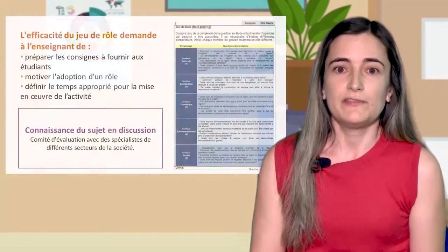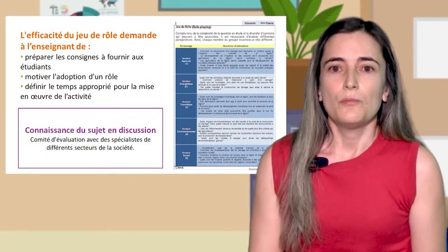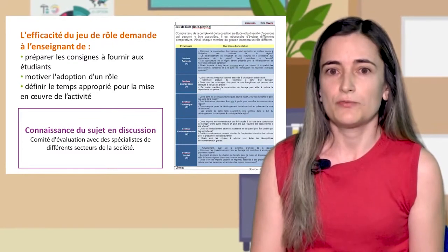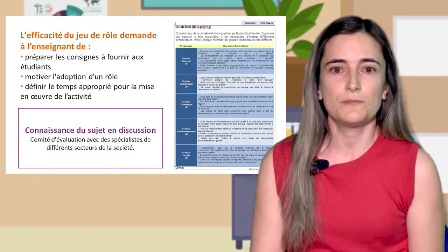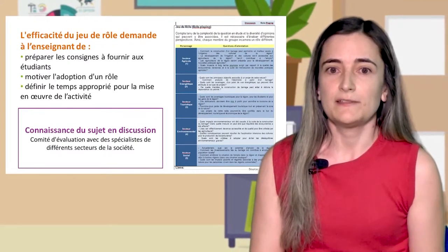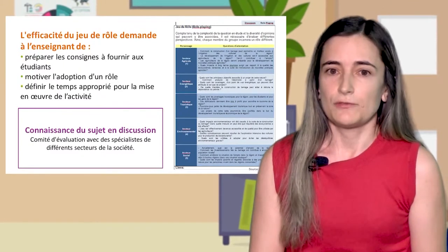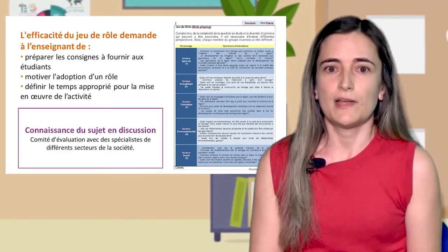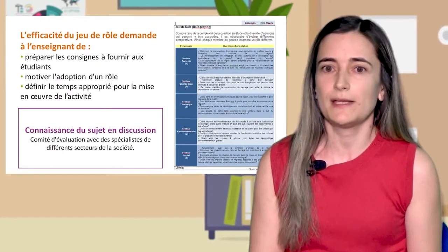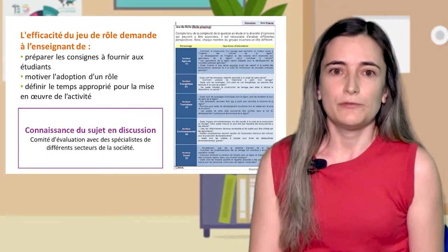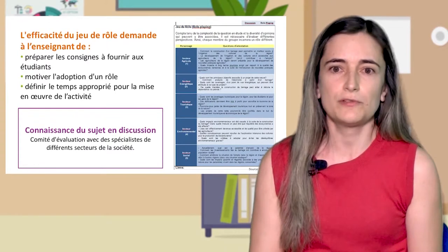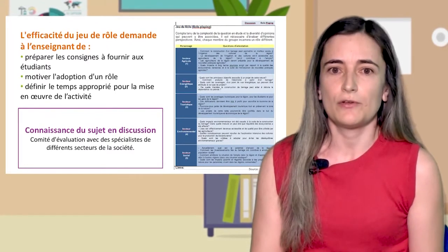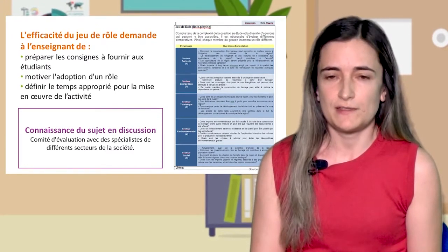À considérer que l'efficacité du jeu de rôle peut exiger à l'enseignant de préparer les consignes à fournir aux étudiants, motiver l'adoption d'un rôle et définir les temps appropriés pour la mise en œuvre de l'activité. Les consignes peuvent intégrer des orientations qui permettent aux participants une meilleure compréhension du sujet, en fournissant des questions d'orientation pour chaque secteur, comme nous le voyons sur cette image.